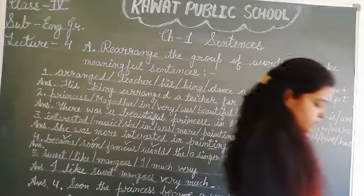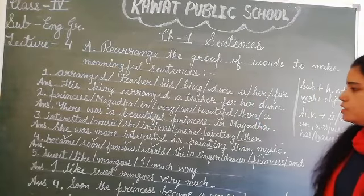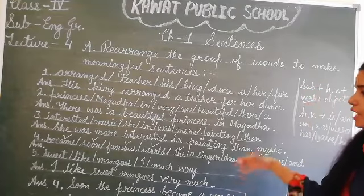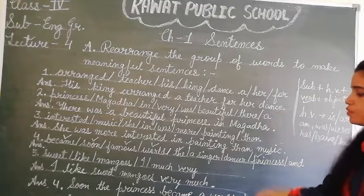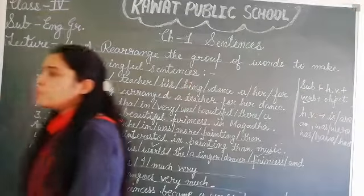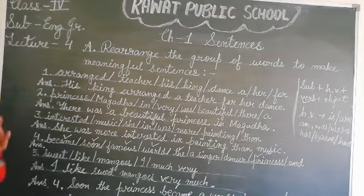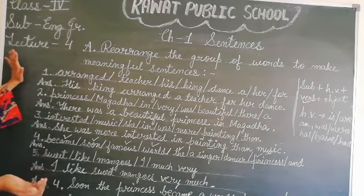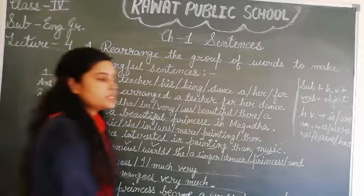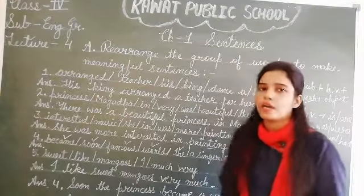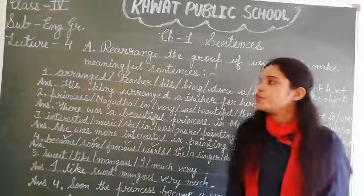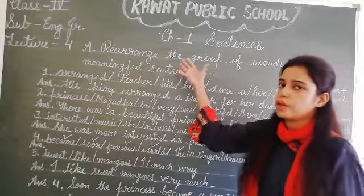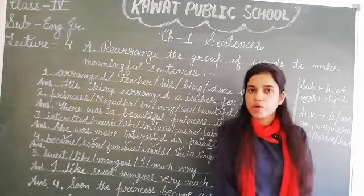Today we have done question number 1 to 5 — यानि आज हमने questions 1 to 5 complete किए। In our next class we will discuss about question number 6 to 10 of question number A. I hope all the students understood this topic. You do question number 1 to 5 of question number A in your fair copies. Thank you.